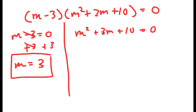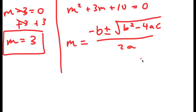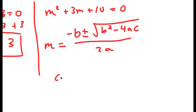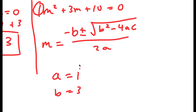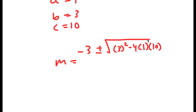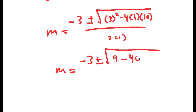For m squared plus 3m plus 10 equals 0, this is a quadratic equation. I'm going to use the quadratic formula: negative b plus or minus the square root of b squared minus 4ac, all over 2a. You should always use this formula for quadratic equations that don't factor out with whole numbers. Here a is 1, b is 3, and c is 10. So I get m equals negative 3 plus or minus the square root of 9 minus 40, all over 2.